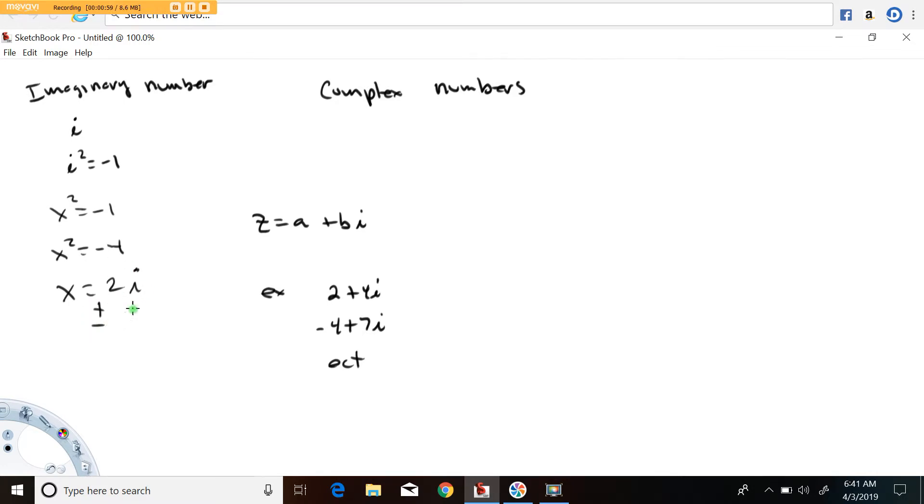The reason this value works is because if we take 2i and square it, we get 4i squared, and 4i squared is minus four.